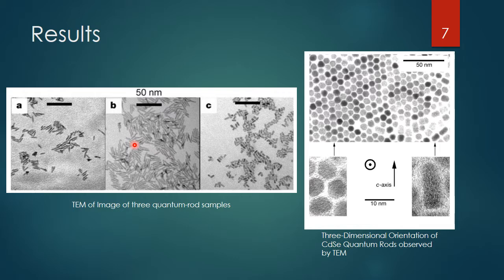Looking at some of the TEM images on the left, you can see they were able to get pretty monodispersed samples — pretty monodispersed runs for the different quantum samples.